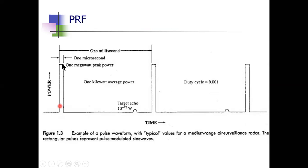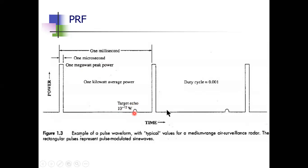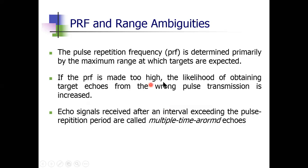When a pulse is transmitted, the received echo pulse should arrive within that same TP interval. The echo pulse will have much less power — on the order of the minimum detectable signal, around 10⁻¹² watts — compared to the peak transmit power of 1 megawatt. If the echo arrives after the TP interval, we have range ambiguity. This topic is about range ambiguity.